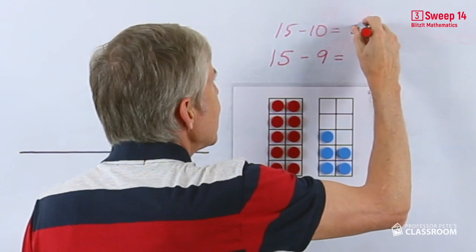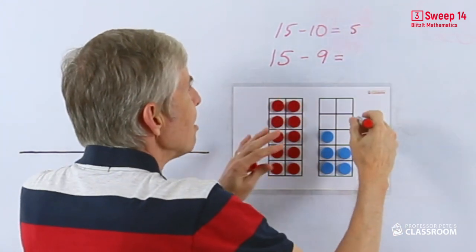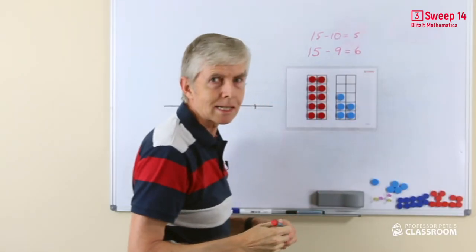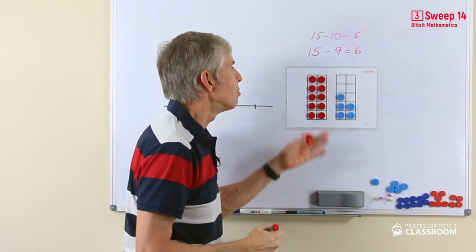So if we know that taking away 10 will equal 5, we don't even need the counters really. We can see that if we only took away 9, one less, there'd be one more left over that would leave 6.